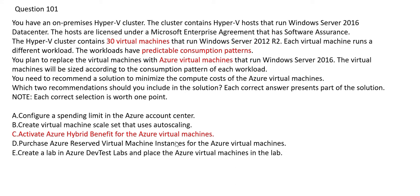Option C recommends using Hybrid Benefit. You save significantly on virtual machine licensing costs by inheriting what is on-premises. You already have Windows Server 2012 and are upgrading to Windows Server 2016, so you can leverage Azure Hybrid Benefit to save on licensing costs. Option C is one correct answer.